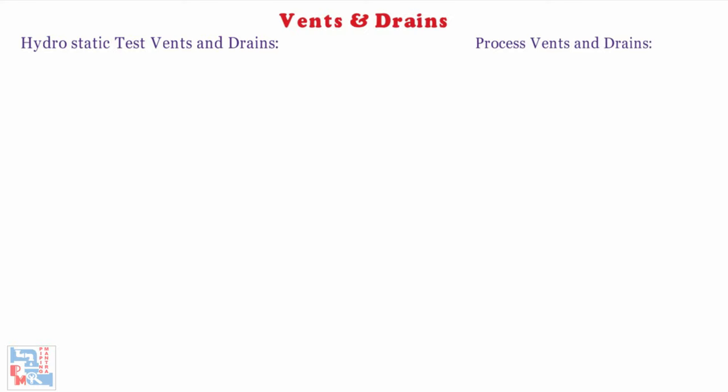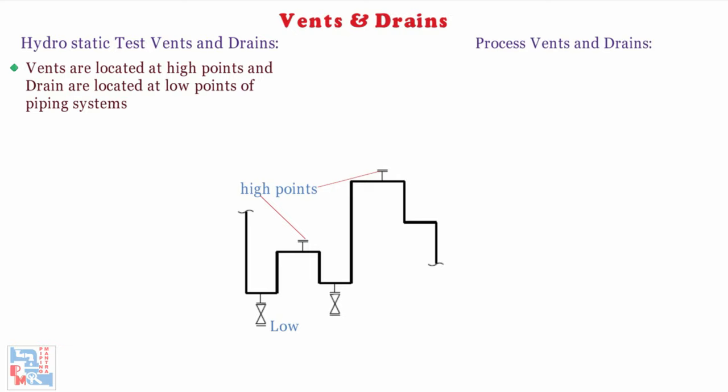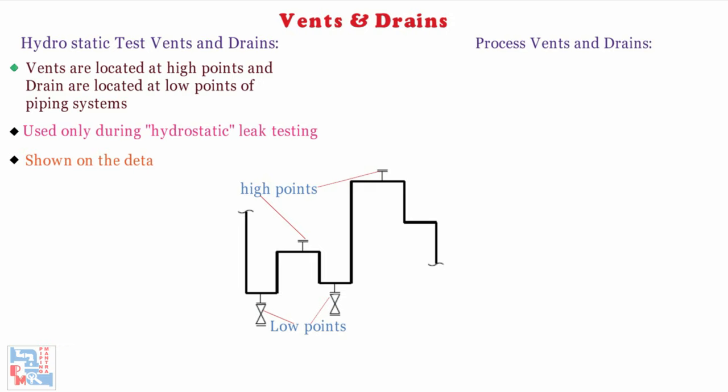Hydrostatic test vent connections are located at high points and drain connections are located at low points of the piping system based upon the physical piping configuration. These connections are used only during hydrostatic leak testing of the piping system. Hydrostatic test vents and drain connections are shown on the detailed construction piping drawings.